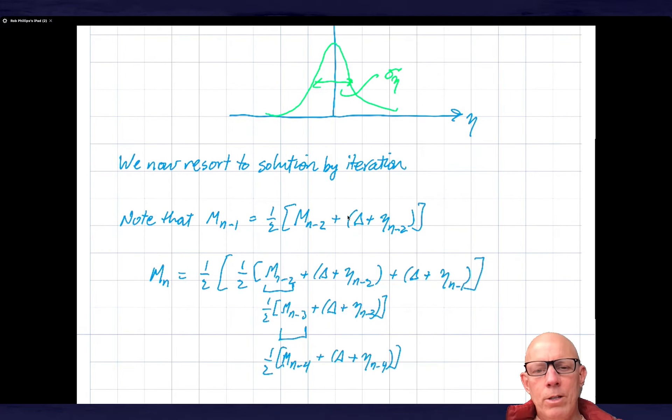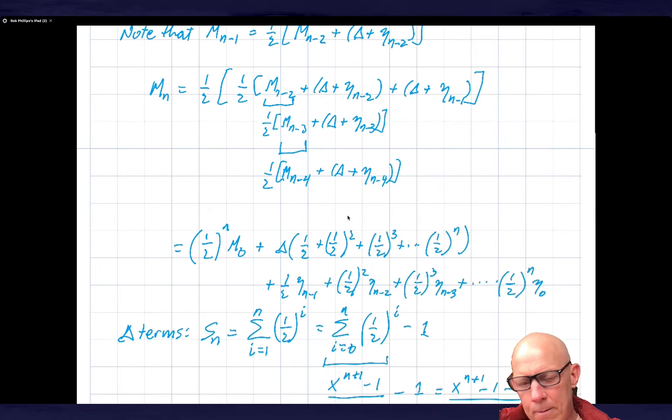Like I did in the case of the timer, I'm going to write this down iteratively. Note that mn minus one equals one half times mn minus two plus delta plus the noise in that generation. I can substitute this in to the previous case, and I can keep going through this procedure again and again. This is really quite cool.